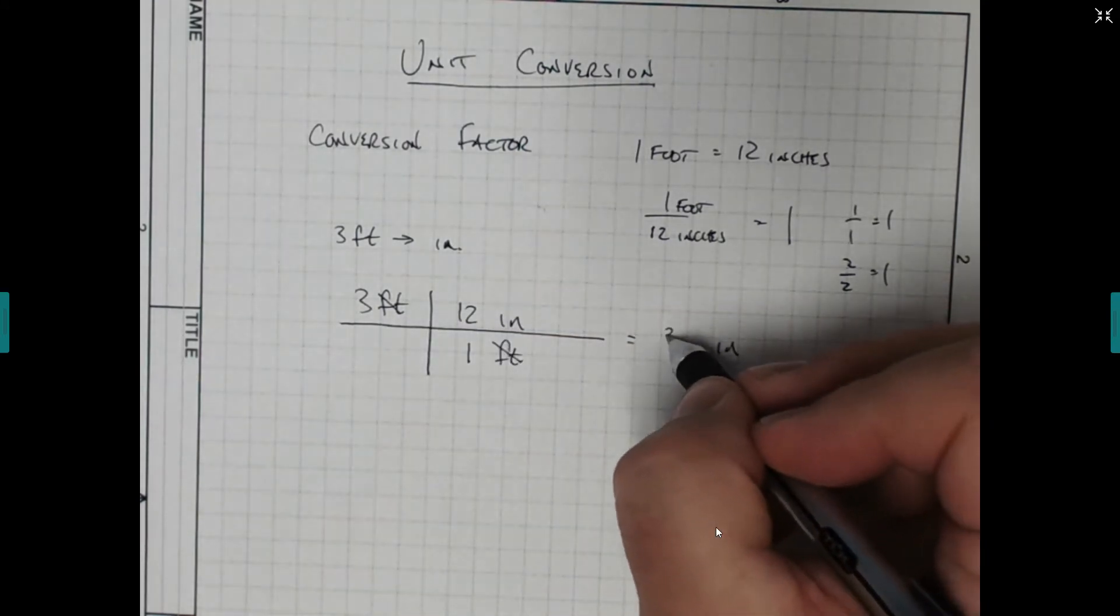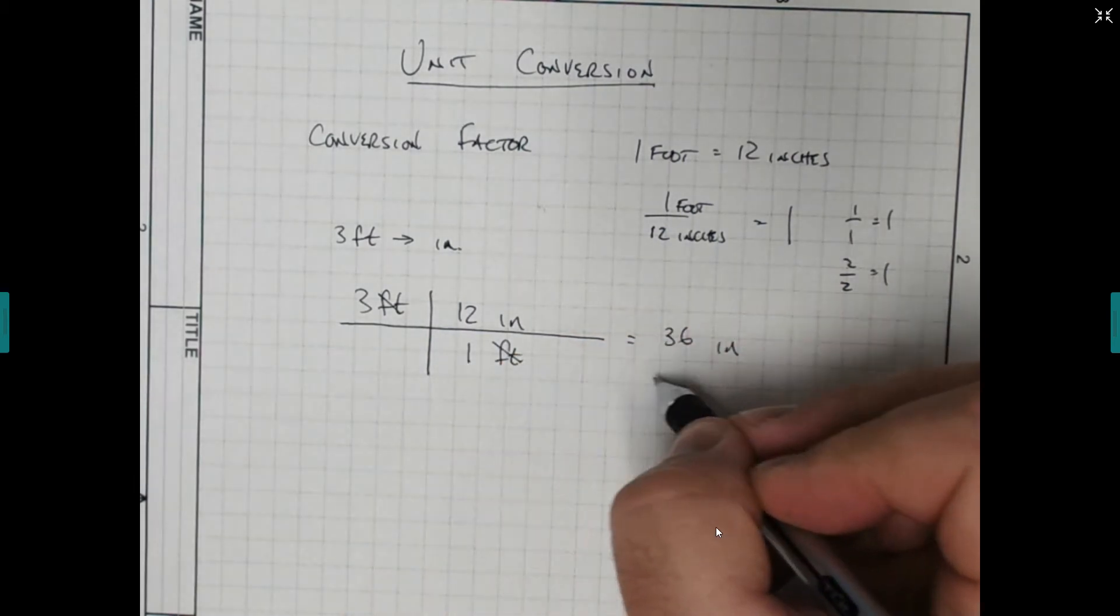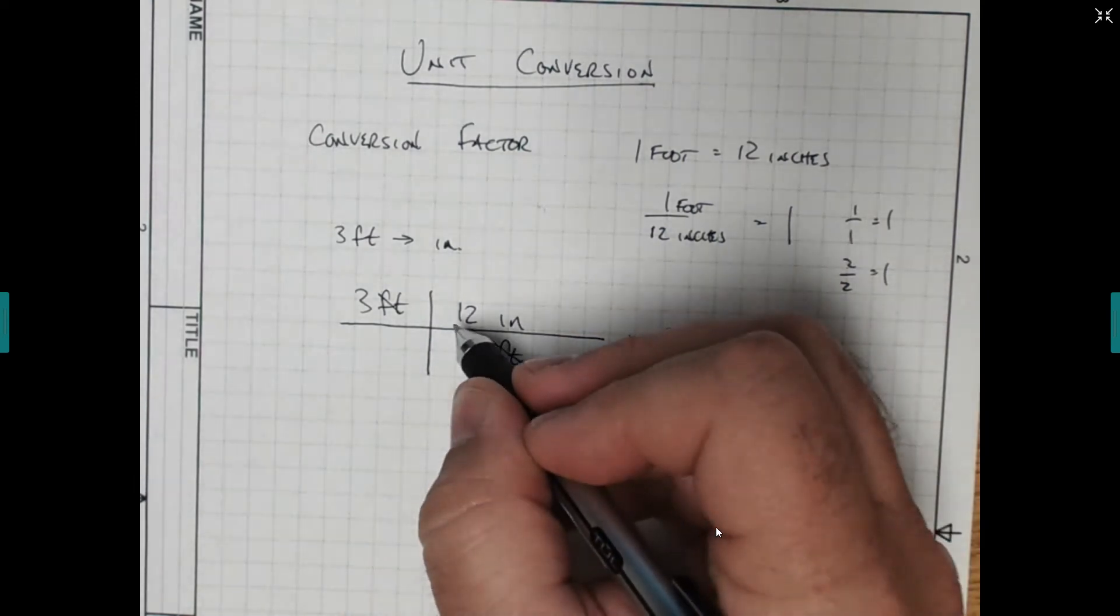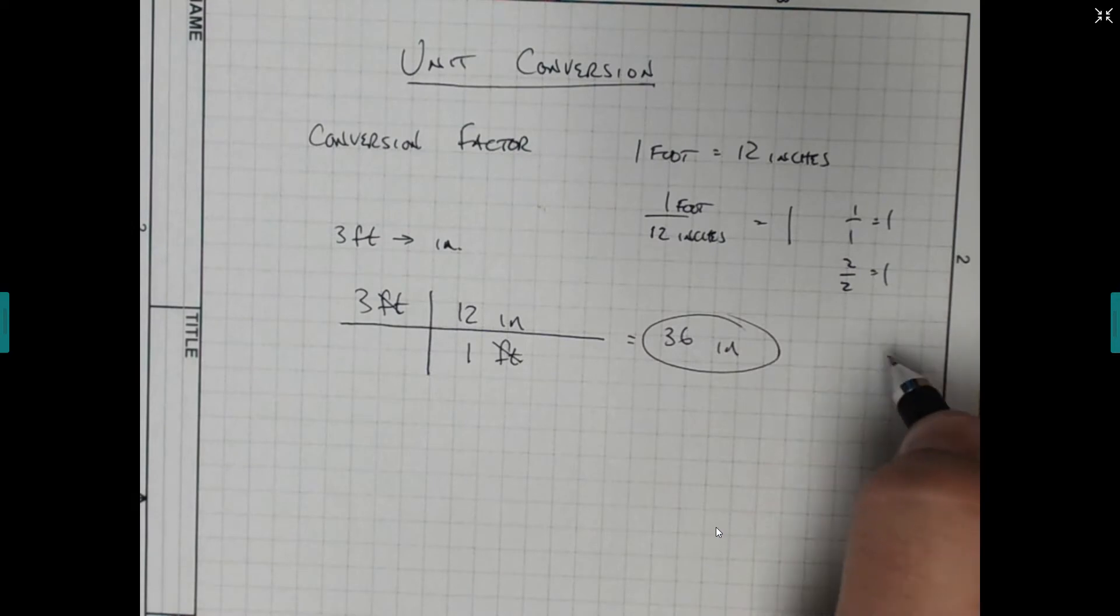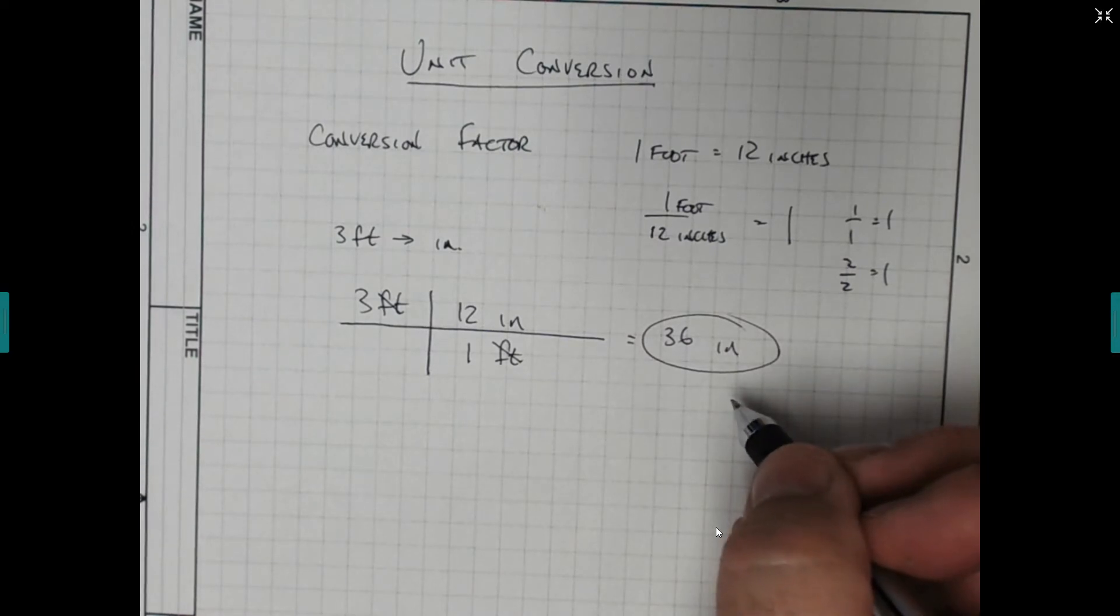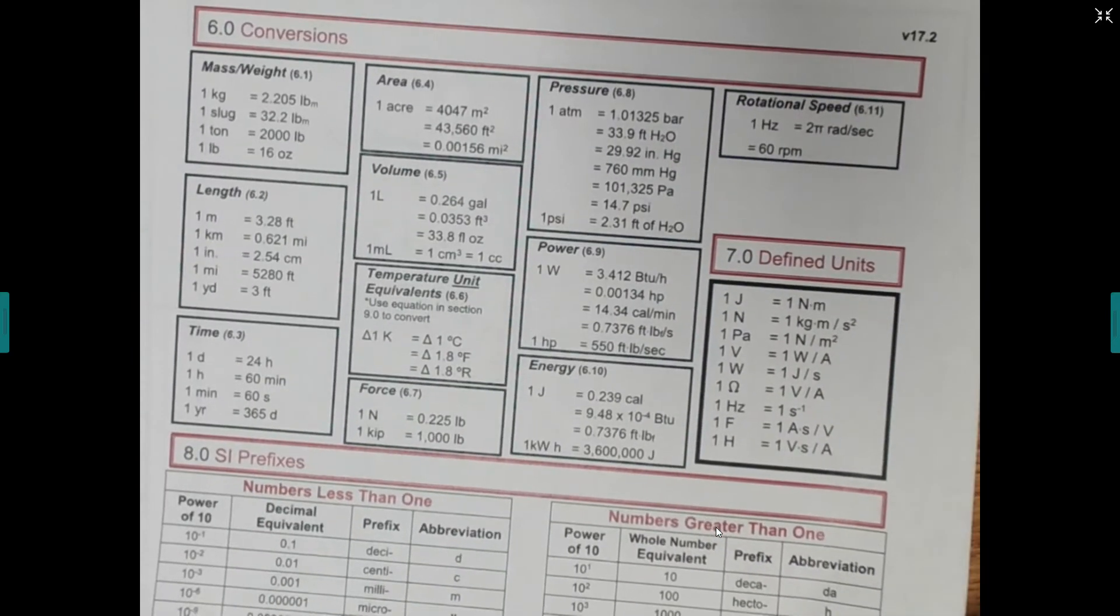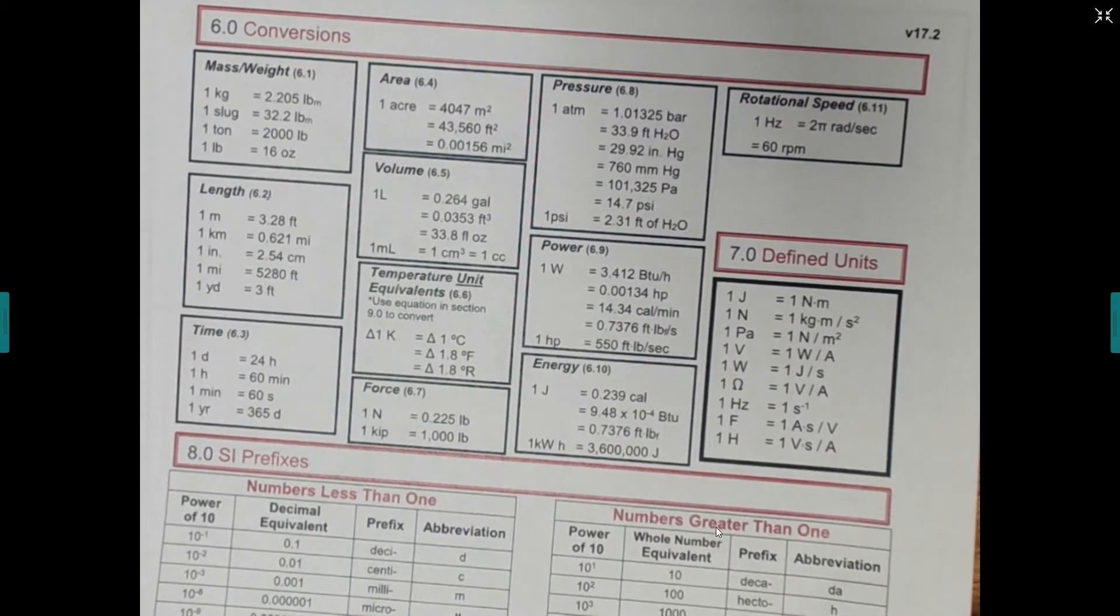And now just 3 times 12 is equal to 36. 1 times 1 is just 1. And so we have 3 feet is now equal to 36 inches. And that's kind of all there is to it. You just got to find your equality, where you're going from, where you're going to.